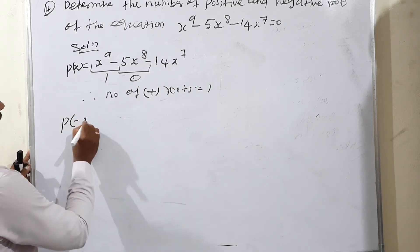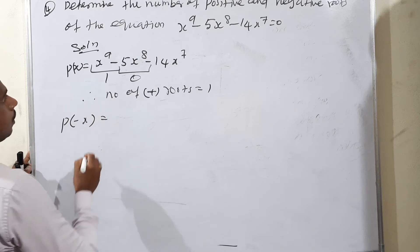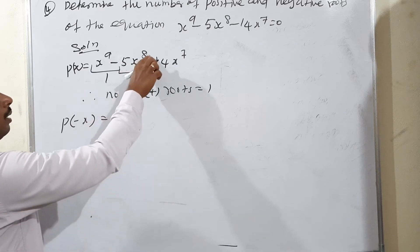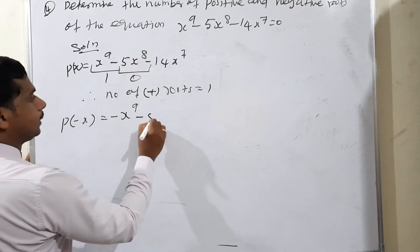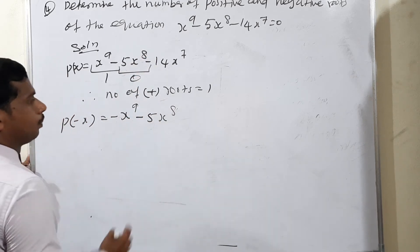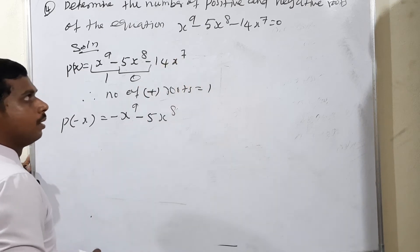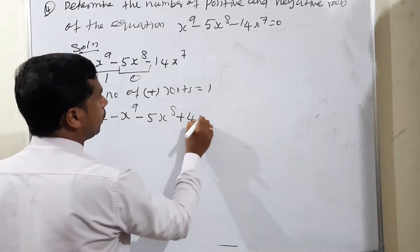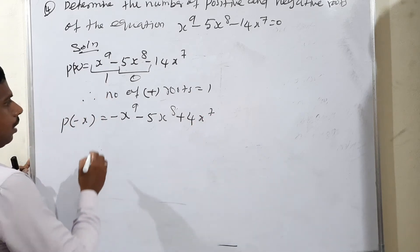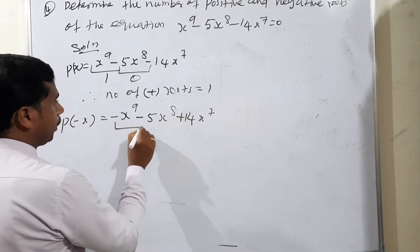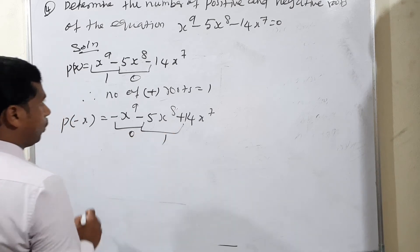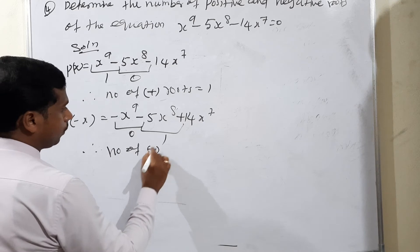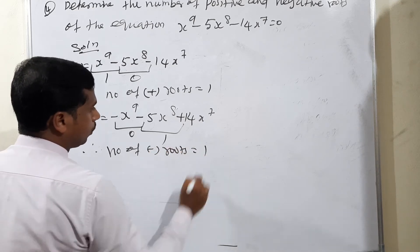For P(minus x), consider the odd powers — odd power gives negative sign, even power gives positive. So negative x to the power 7: negative to negative — no sign change; negative to positive — 1 sign change. Therefore the number of negative roots is equal to 1.